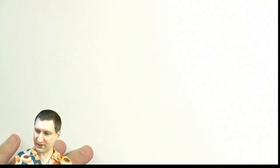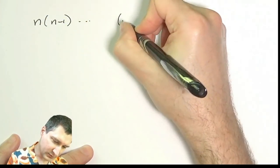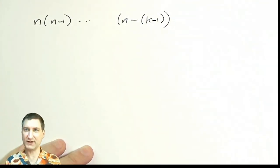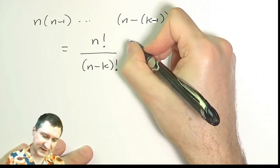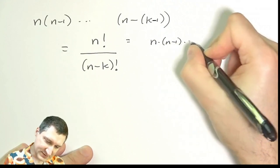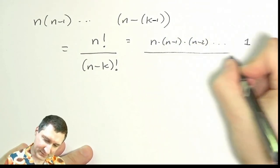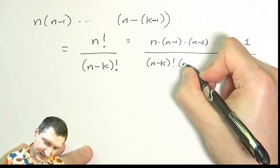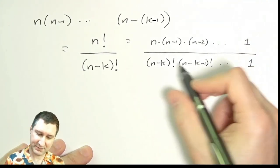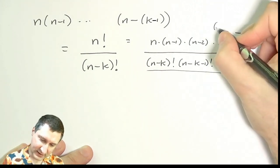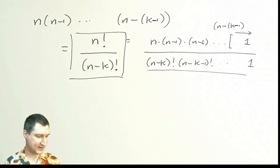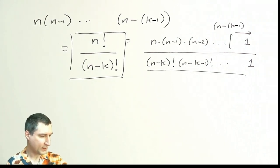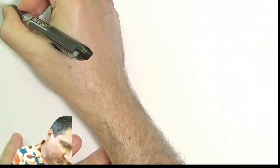This number — n times n minus 1 all the way to n minus k plus 1 — can be written more easily using factorial notation: n factorial over n minus k factorial. Remember n factorial is n times n minus 1 all the way down to 1, so n minus k factorial cancels out all terms below n minus k plus 1. These numbers get hard to deal with when n and k are large.